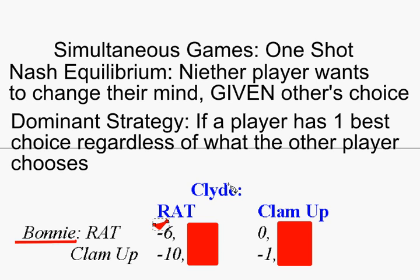Now what if Clyde clams up — stays quiet — Bonnie, what do you want to do? Would you rather go to jail for zero years by ratting, or go to jail for one year if you stay quiet? And Bonnie says she would want to rat again. That's her best choice. So no matter what Bonnie thinks Clyde is going to do, she does better by ratting if Clyde rats, and she does better by ratting if Clyde clams up. This is what we call a dominant strategy: one best choice regardless of what the other player chooses. Bonnie always wants to rat.